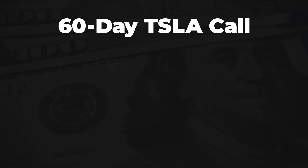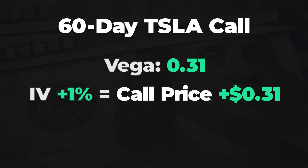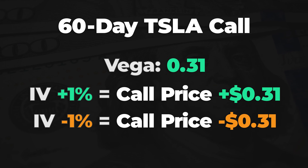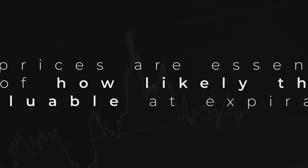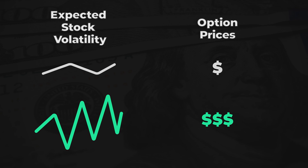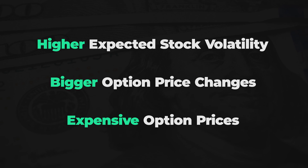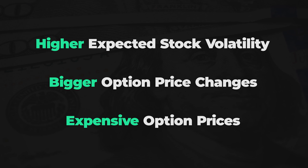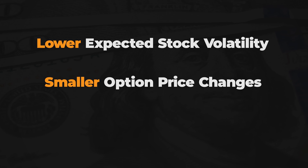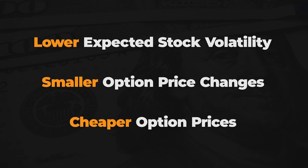Look at a 60-day Tesla call option with a Vega of 0.31. This suggests that if implied volatility increases by 1%, the option's price is expected to rise by $0.31, and if implied volatility decreases by 1%, the option's price is anticipated to fall by $0.31. An increase in expected stock volatility will inflate all option prices because larger anticipated stock price movements mean larger potential option price movements. Conversely, a decrease in expected stock volatility will deflate all option prices.